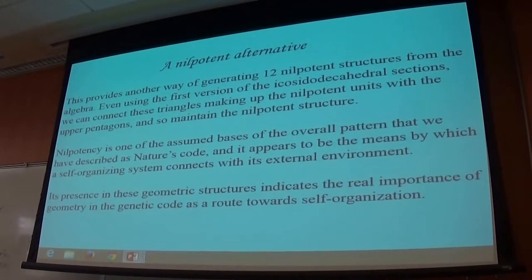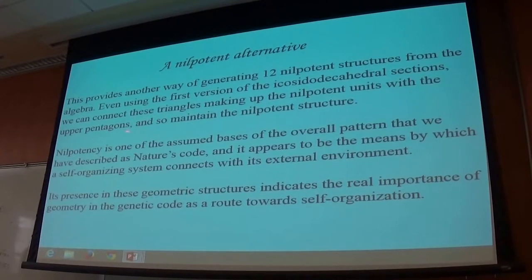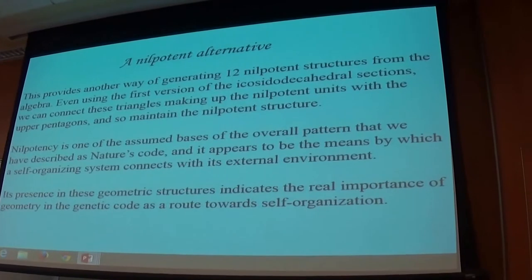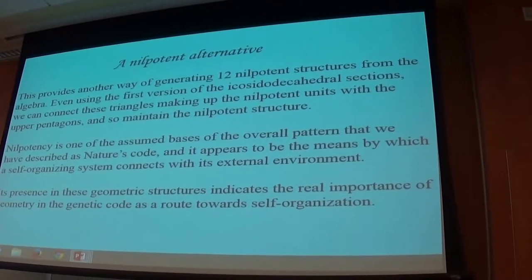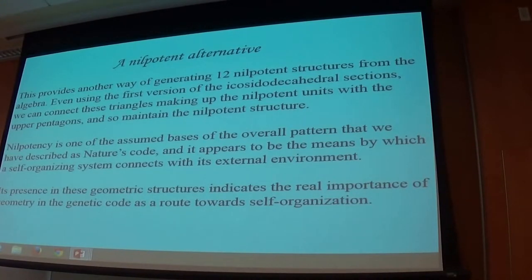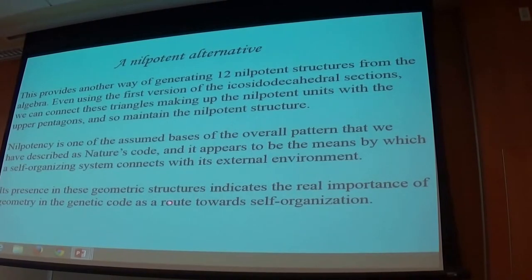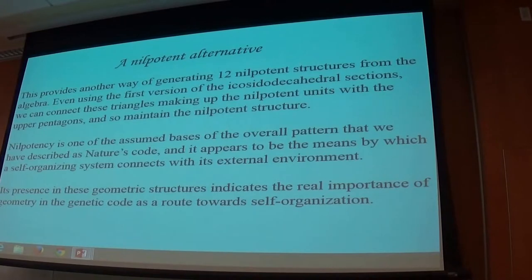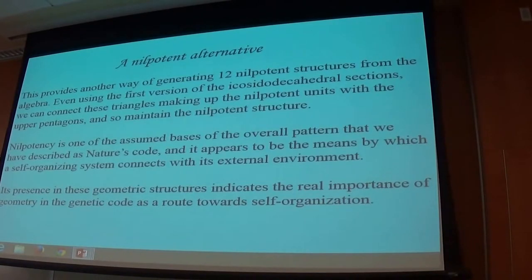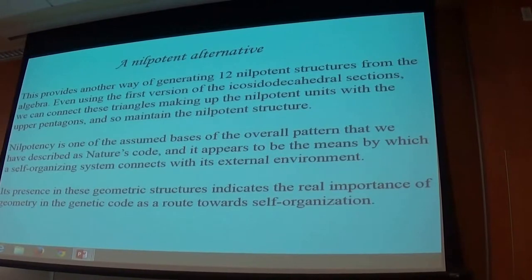Nilpotency is one of the assumed bases of the overall pattern we've described in nature's code — this is how these things operate. Nilpotency means that the system and the environment are mirror images of each other and, connected together, they create zero by addition or multiplication. It appears to be the means by which a self-organizing system connects with its external environment. Its presence in these geometric structures indicates the real importance of geometry as well — not so much in physics, but in biology, where the positioning of these objects geometrically on the axis of RNA or DNA will to a large extent determine what happens.